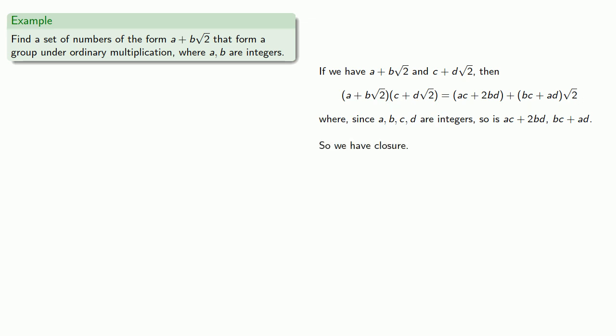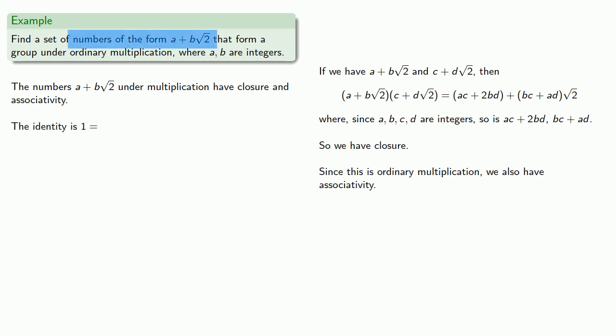Since this is ordinary multiplication, we also have associativity. Now the identity for ordinary multiplication is 1, but we're dealing with numbers of the form A plus B square root of 2, so we have to make sure that the identity is actually in this set. Fortunately, it is.